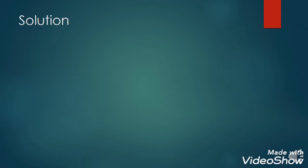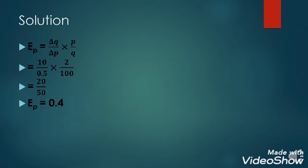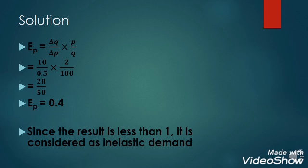Now let's have the solution. From this formula: 10 over 0.5, times 2.00 over 100. 10 times 2.00 is equal to 20, and 0.5 times 100 is equal to 50. 20 divided by 50 is equal to 0.4. That is the price elasticity of demand. Since the result is less than 1, it is considered as price inelastic demand.